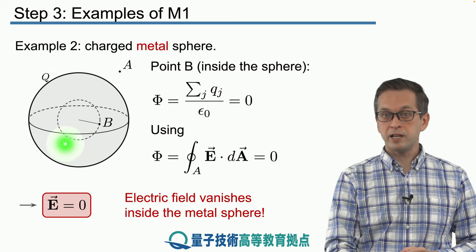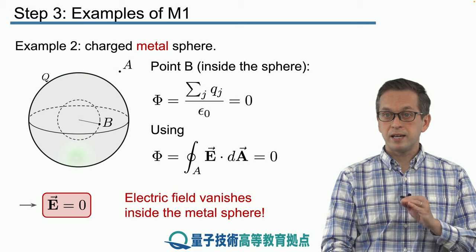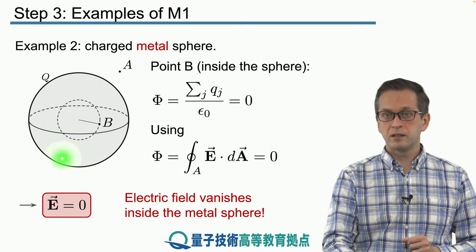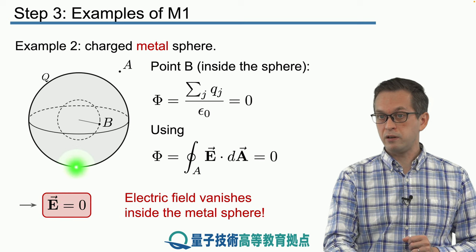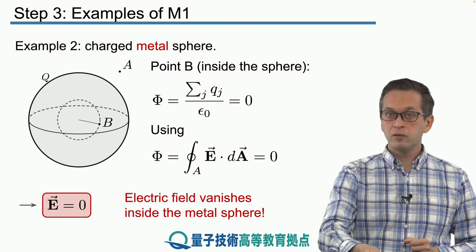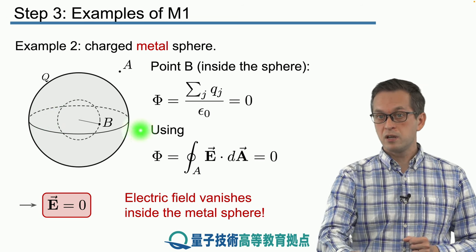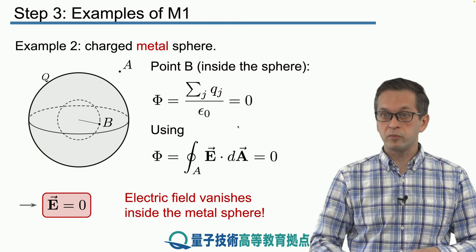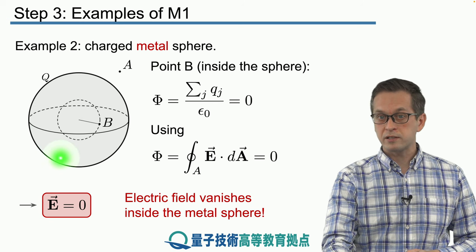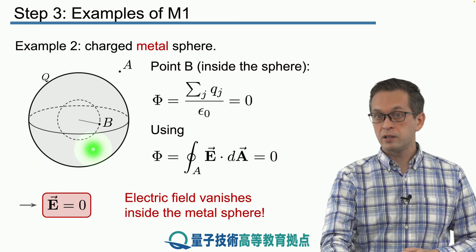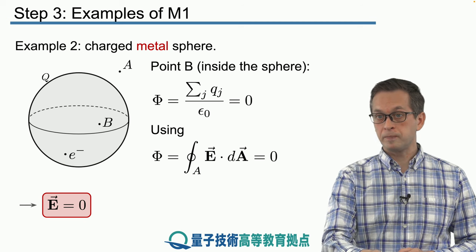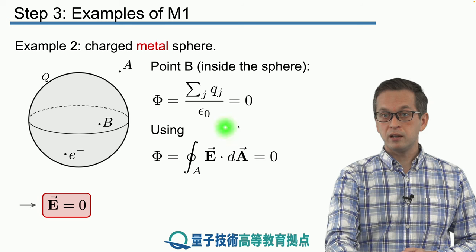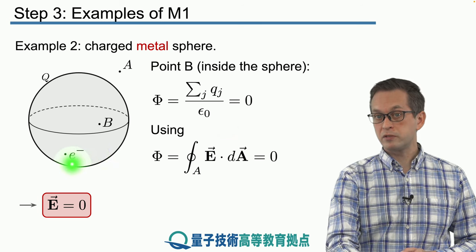So, outside the metal sphere at point A, the electric field is the same as if all the charge were concentrated in a single point charge at the center. But inside the sphere, there is no electric field. If we put a test charge inside closer to the surface, that test charge would not move because the electric field is zero and therefore the force is zero. You might think it would feel the force from nearby charge, but we also have to consider contributions from the larger surface area on the opposite side. Even though it's further away, the total contribution from that larger surface exactly cancels the contributions from the smaller nearby area. So if the sphere has positive charge and we place an electron closer to the surface, it would not move.